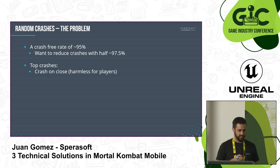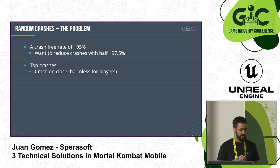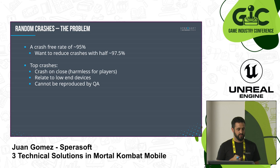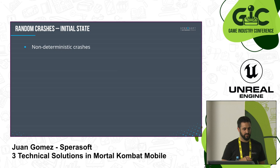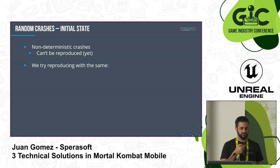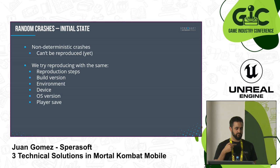We tried reproducing with the same steps as players, same build version, same server environment, same device model, same OS, same player save — we still couldn't reproduce it. The answer has to do with the garbage collector. The garbage collector is called randomly, and you can call it manually if you want using a specific function. It may be called more often if a lot of applications are running on the phone consuming the same memory.